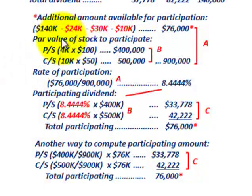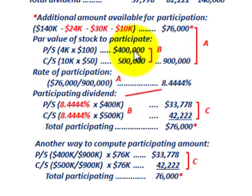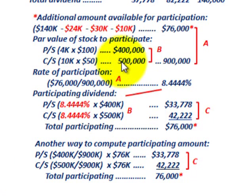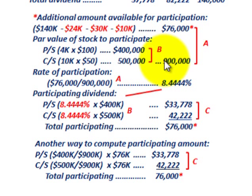Now we have to figure out the allocation of the remaining $76,000. We start with the par value of the stock that's to participate. Preferred stock: 4,000 shares × $100 par = $400,000. Common stock: 10,000 shares × $50 par = $500,000. The total par value for both preferred and common stock is $900,000, and that's what we use to determine the rate of participation.